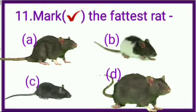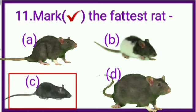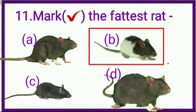Sum number 11. Mark tick the fattest rat. See students, in this picture, 4 different rats are shown. By seeing, we can easily say, C number rat is smallest and thinnest among all.